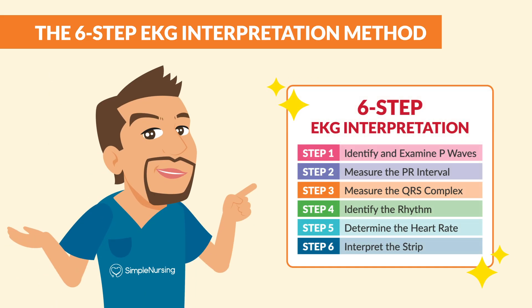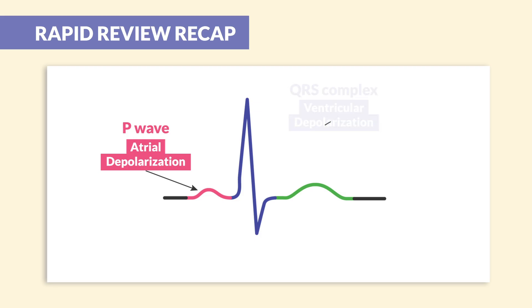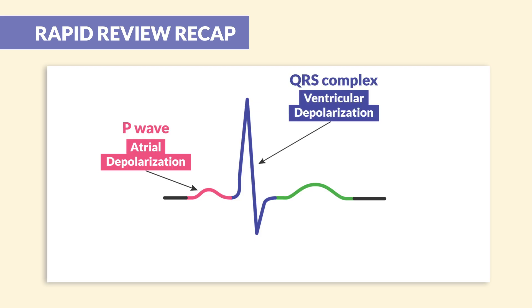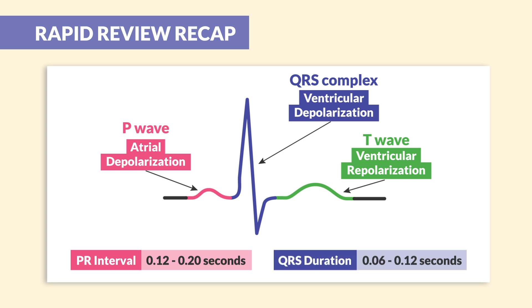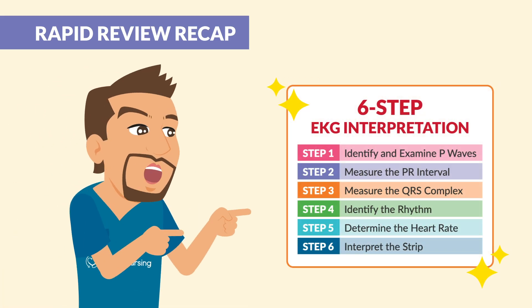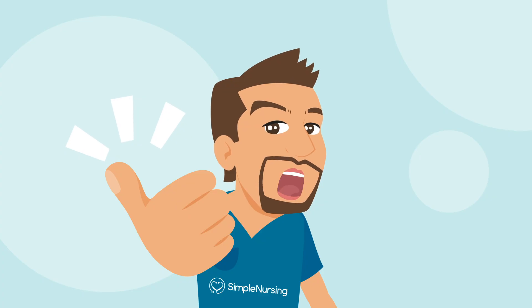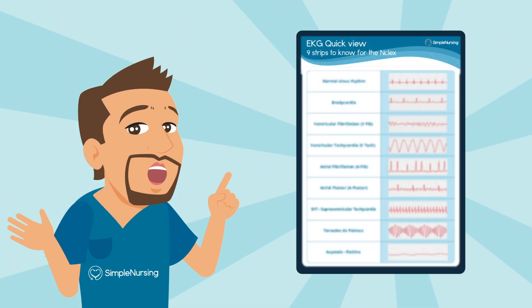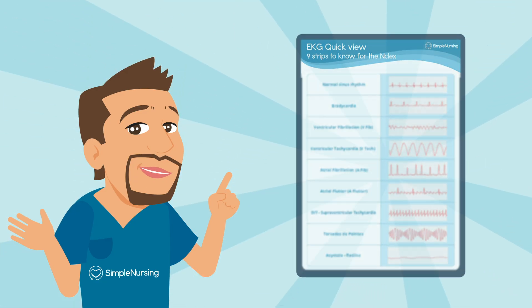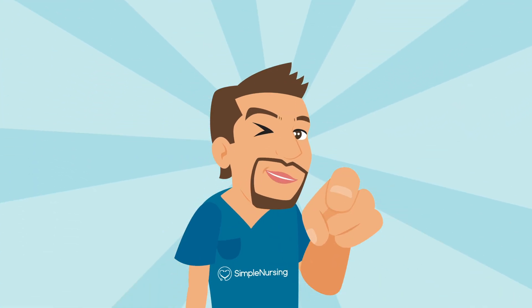Your six-step method is your ticket to EKG mastery. Rapid-fire review: P wave is atrial depolarization — that atrial squeeze. QRS is ventricular depolarization — that ventricular squeeze. T wave is ventricular repolarization, where it's relaxing and refilling with blood. PR interval is 0.12 to 0.2 seconds. QRS duration is normally 0.06 to 0.12 seconds. Never forget your six-step method. If this made EKGs feel less scary, give the video a thumbs up and hit subscribe for more high-yield nursing tips. Don't forget to download your free EKG cheat sheet in the description below. Until next time, keep rocking those strips — you've got this!